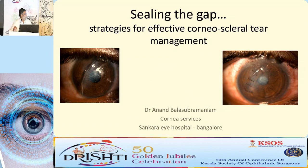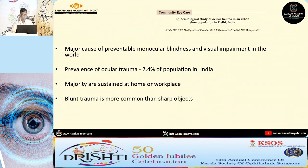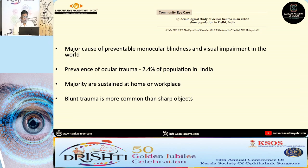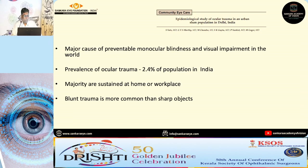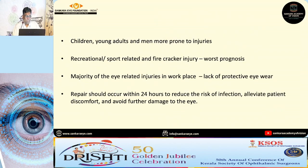The talk I've been given is effective corneal tear management. It is a true emergency which needs immediate care and it is the major cause of preventable monocular blindness. The prevalence is around 2.4%. Majority of them are sustained at home or workplace and blunt trauma is more common than sharp objects.